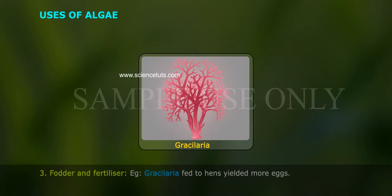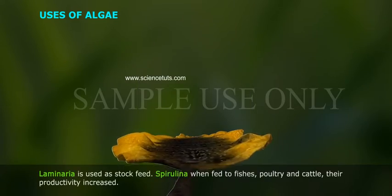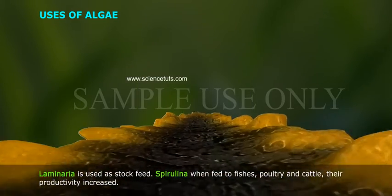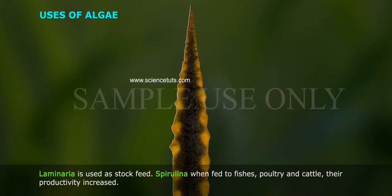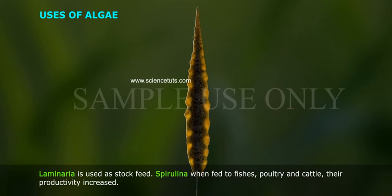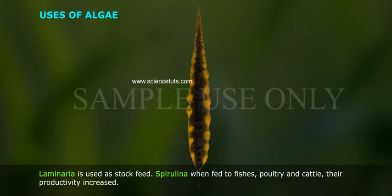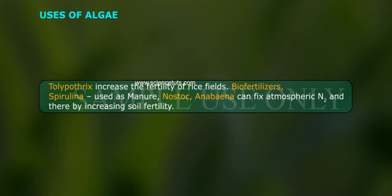Fodder and Fertilizer. Gracilaria fed to hens yielded more eggs. Laminaria is used as stock feed. Spirulina, when fed to fishes, poultry and cattle, their productivity increased.